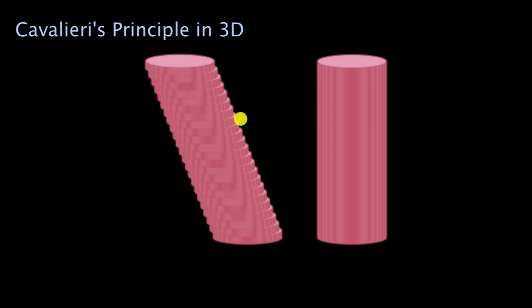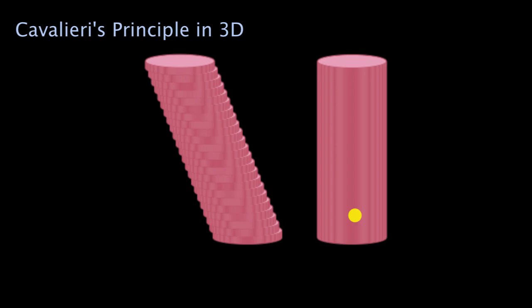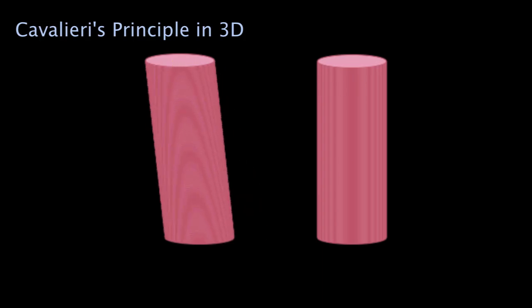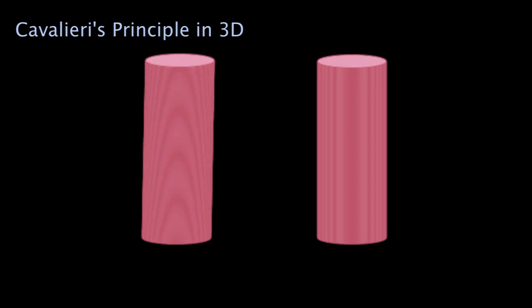How does that apply to what's going on here? Both of these figures have the same height, and at any point — wherever I did the cuts — the cross-sectional area is going to be the same, because it equals the area of the base. So it meets Cavalieri's principle. With more cuts, you get a more continuous-looking skewed cylinder, but it has the same volume as the original. Shifting it around does not change the volume.